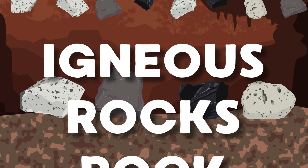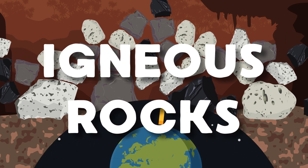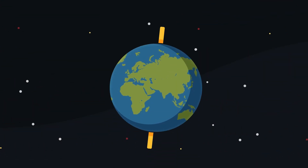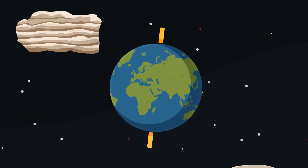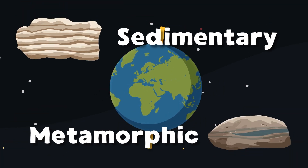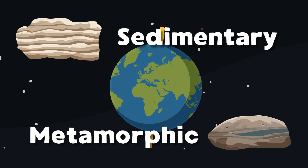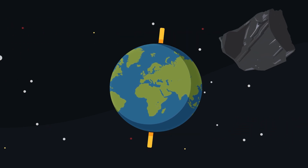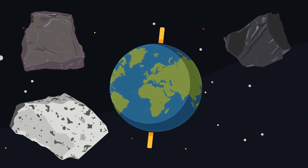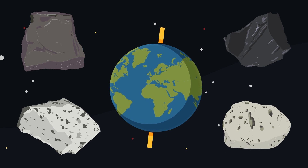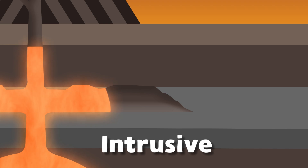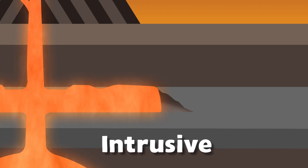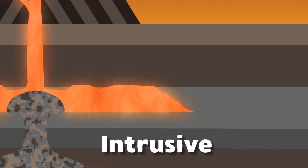Igneous rocks are one of the three main types of rocks on earth — the other two are sedimentary and metamorphic. Igneous rocks can have various textures, which are classified into two primary categories. Intrusive igneous rocks form below the earth's surface when magma cools slowly.